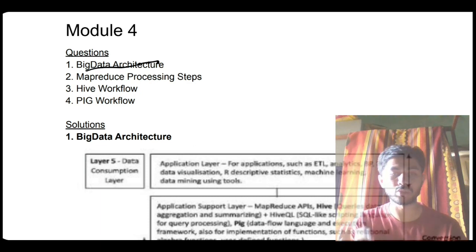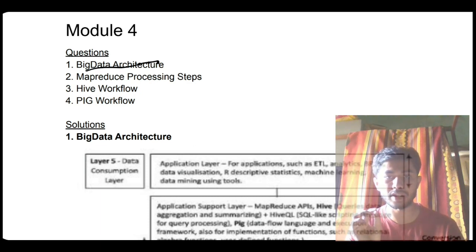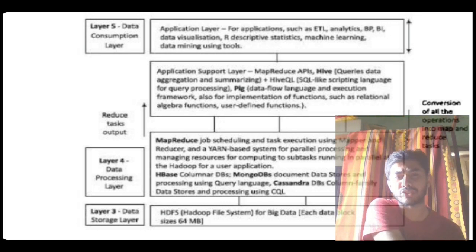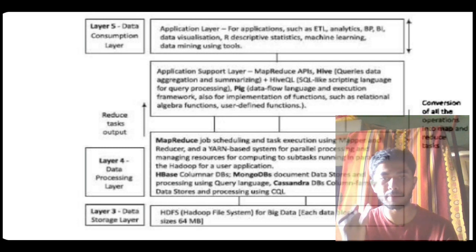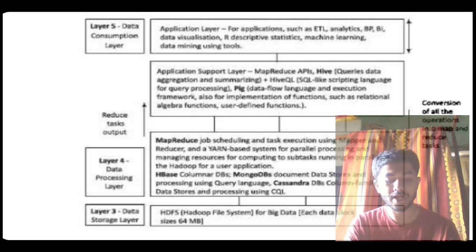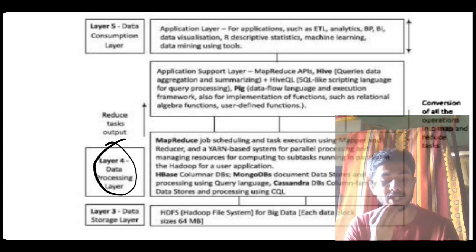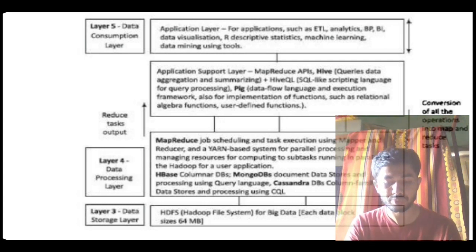The first question they can ask is about the big data architecture. We have learned the big data architecture before, but in this case they are focusing on the upper half — these three layers. They will not explicitly ask about the big data architecture, but they can ask how you implement MapReduce, Spark, Hive, and those concepts, including workflow concepts, data processing, MapReduce concepts, HDFS, and MongoDB concepts during data processing.